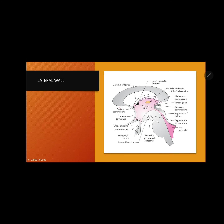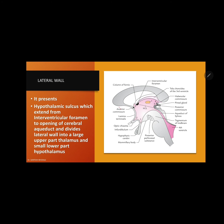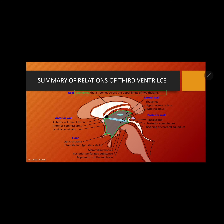Coming to the lateral wall of the third ventricle: as it is an interthalamic space, the lateral wall is formed by the thalamus and hypothalamus. The lateral wall presents the hypothalamic sulcus, which divides it into a postero-superior area formed by the thalamus and an antero-inferior area formed by the hypothalamus. This hypothalamic sulcus extends diagonally from the foramen of Monroe to the opening of the cerebral aqueduct, and you also see the interthalamic adhesion.